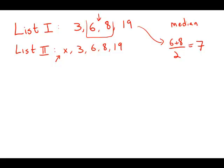if x were less than 3, then obviously the median would be 6 and the two lists would not have the same median. So x must be between 6 and 8.